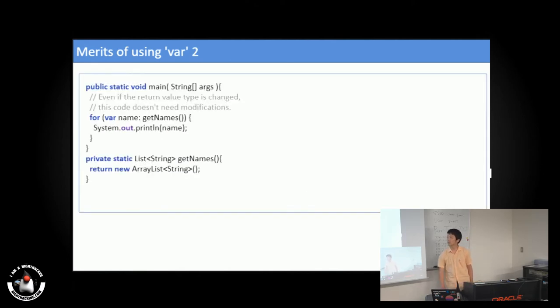For example, in this code, if the method getNames, the returning type changes from array of string, I don't need to change this code.